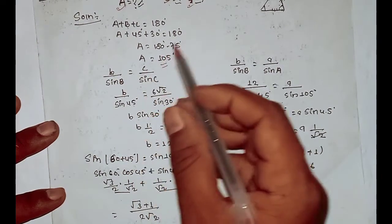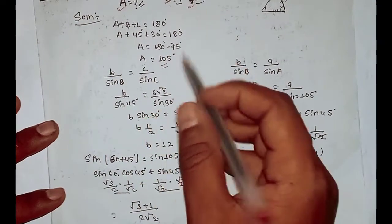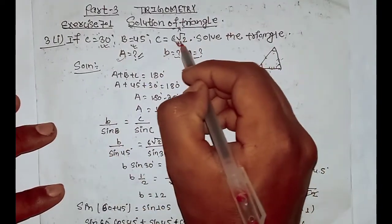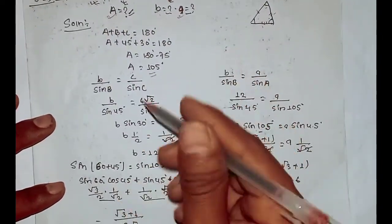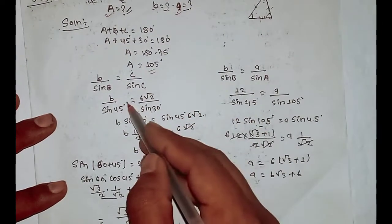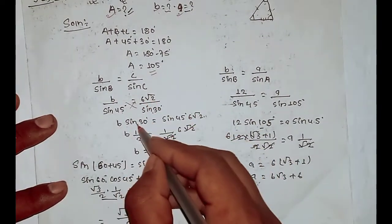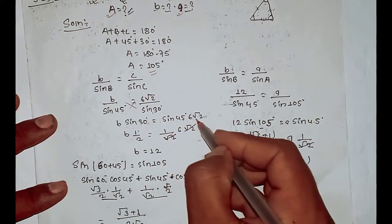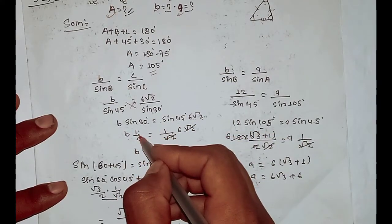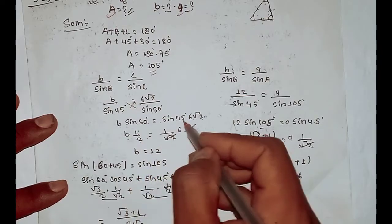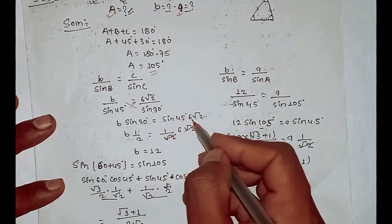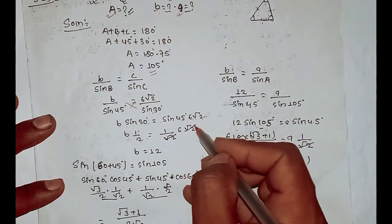Now we use the sine rule. We have 6 root over 2. Using b over sin 30 equals c over sin 45: b sin 30 equals sin 45 times 6 root 2. Sin 30 is 1 by 2 and sin 45 is 1 over root 2. We get 1 root over 2 times 6 root over 2, then root over 2 and root over 2 terms cancel out.